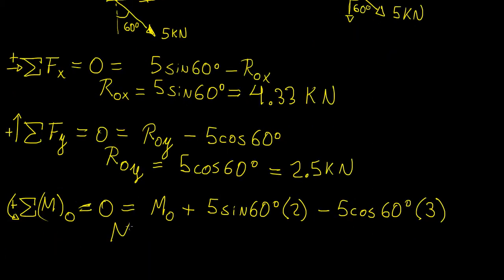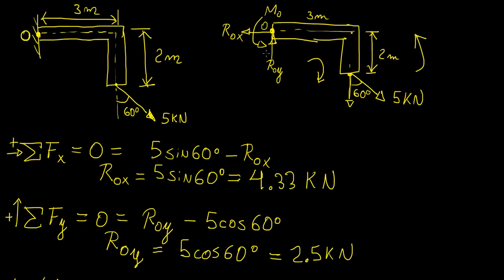So now we solve for the bending moment reaction. And that's going to give us minus 1.16 kilonewton meters. Now the reason it's negative is because our original assumed direction is incorrect. So it is actually going in the other direction.